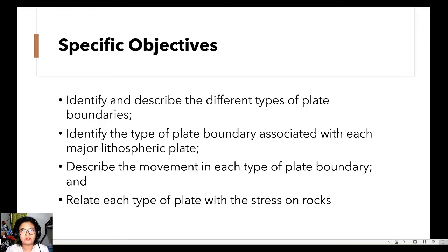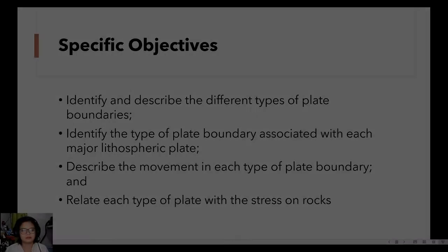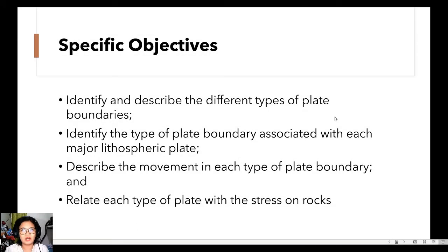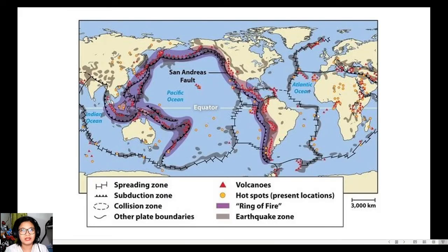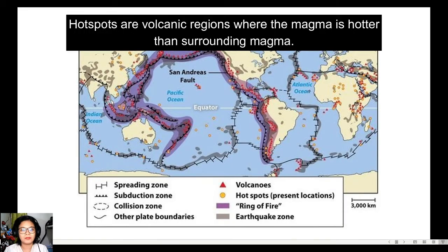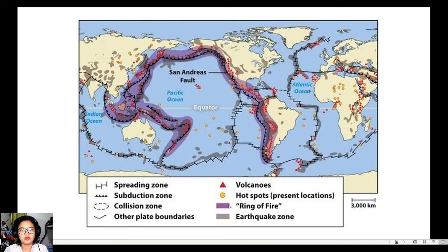Are you ready? Without further ado, let's start! Let's begin with a short recap of what we have discussed in the past three weeks. Here, we can see a map showing the different lithospheric plates and various geologic occurrences. The triangles show the volcanoes, the yellow circles show the hotspots which are also volcanoes, the violet part shows the Ring of Fire, and the shaded areas show the places with earthquakes. As we can see on the map, most of these geologic occurrences happen at the same place — these places are called the plate boundaries.